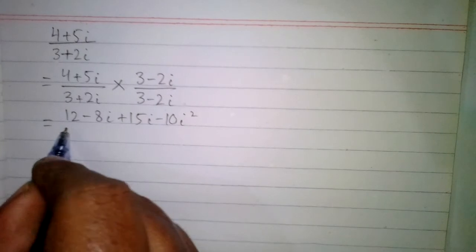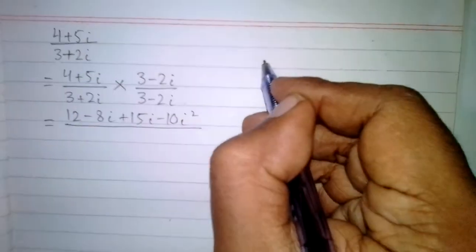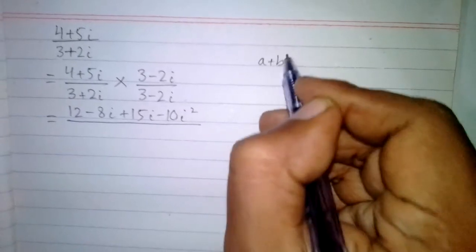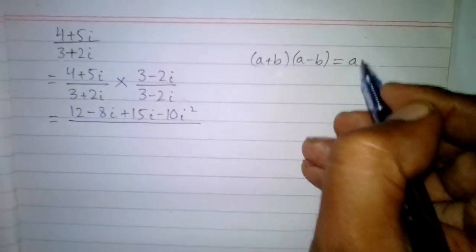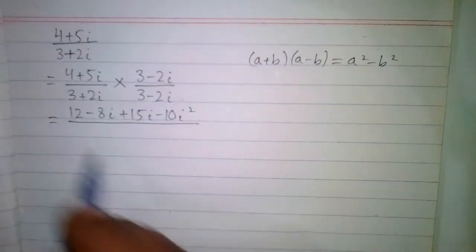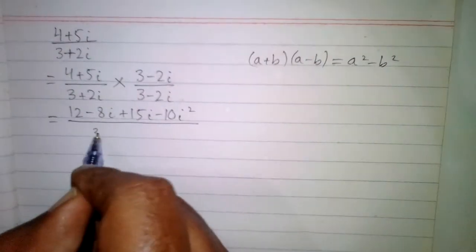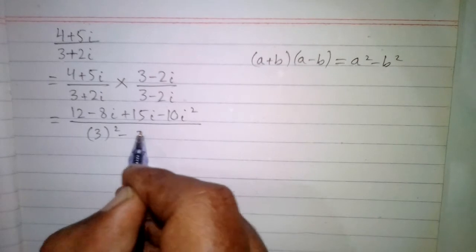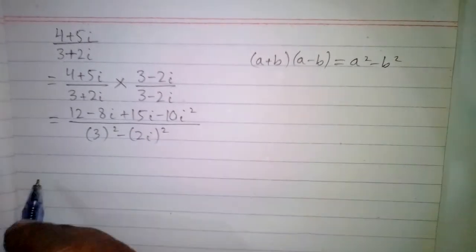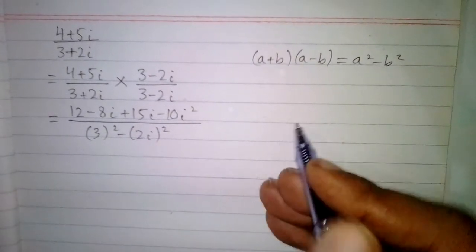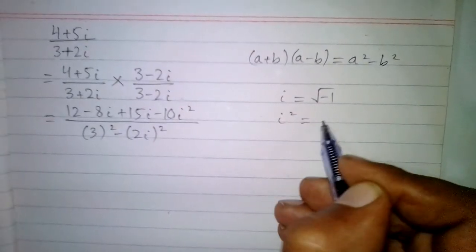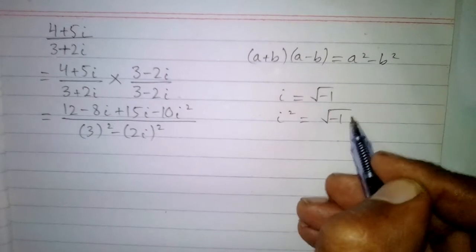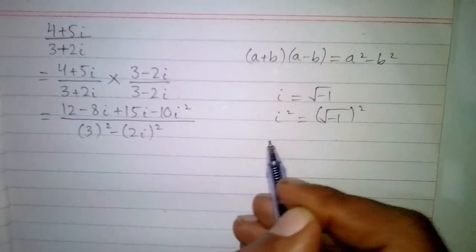In the denominator, we apply the formula (a + b)(a − b) = a² − b², so we have 3² minus (2 iota)². We know that iota is the square root of minus 1, so iota squared equals minus 1.